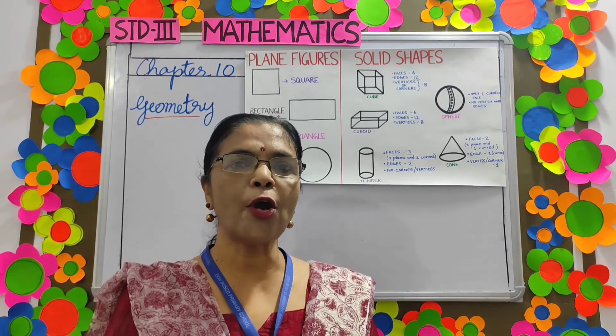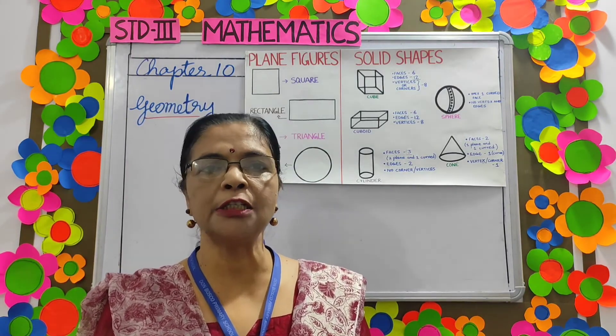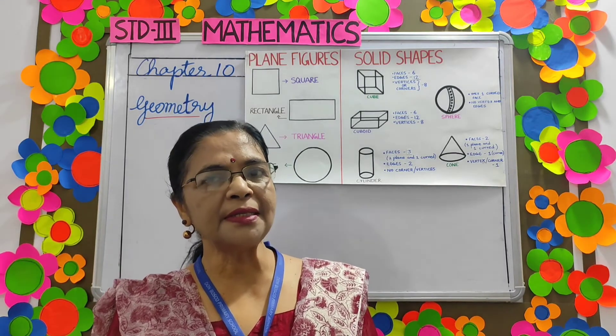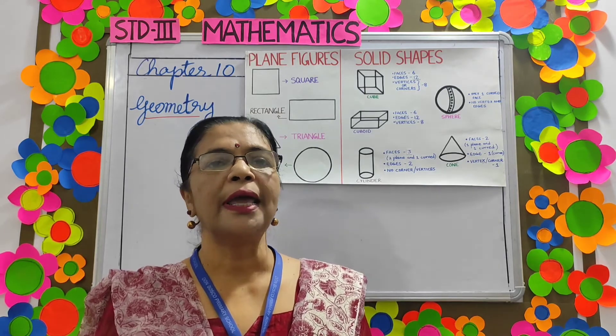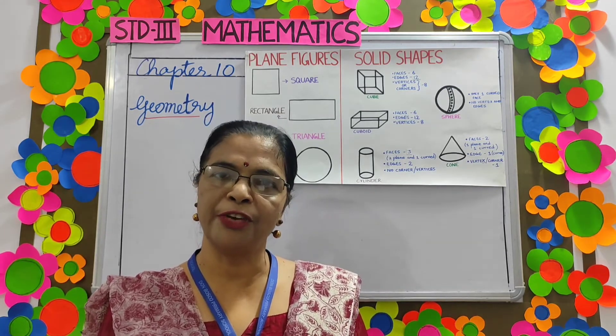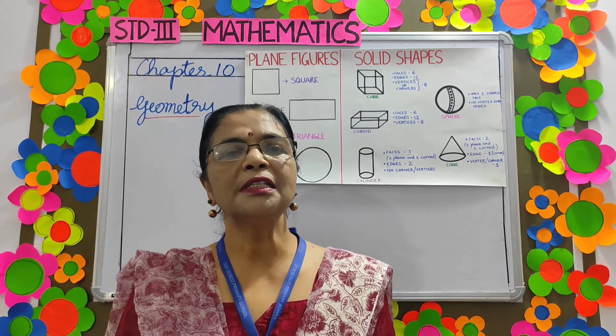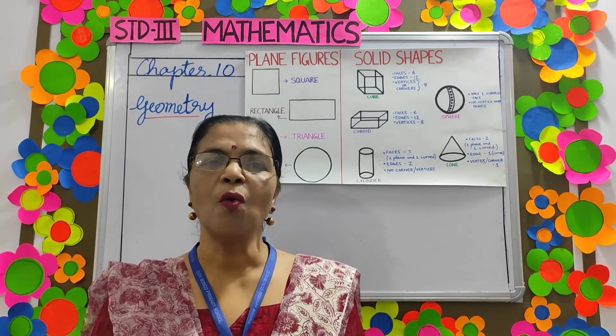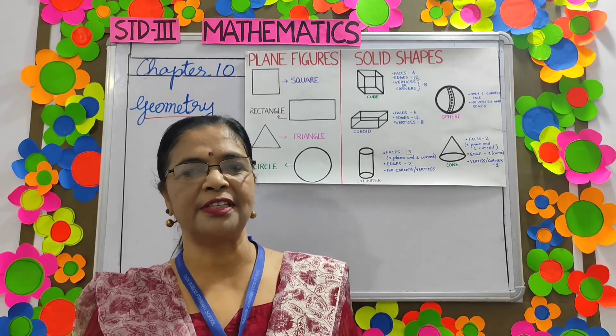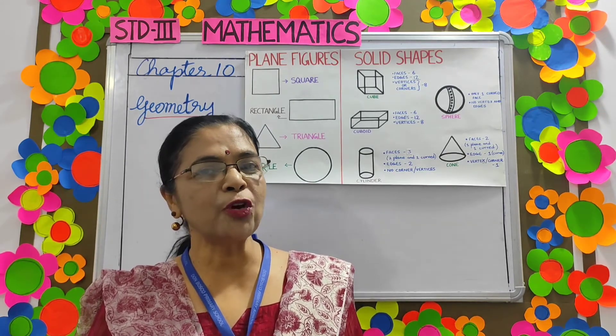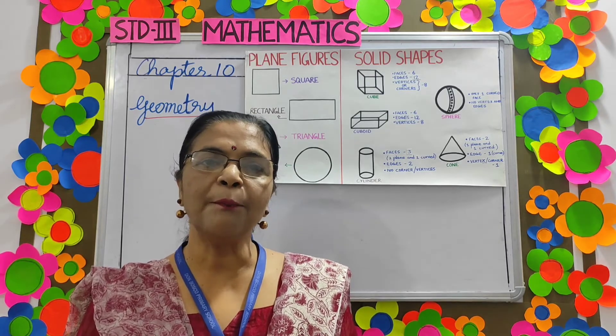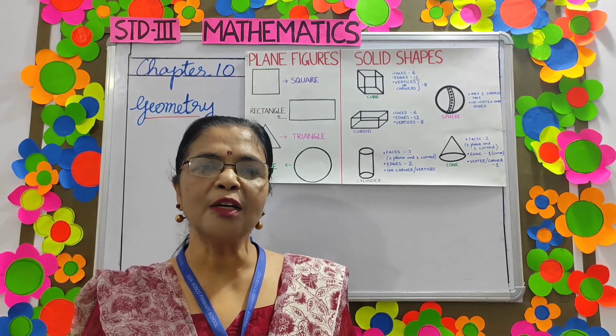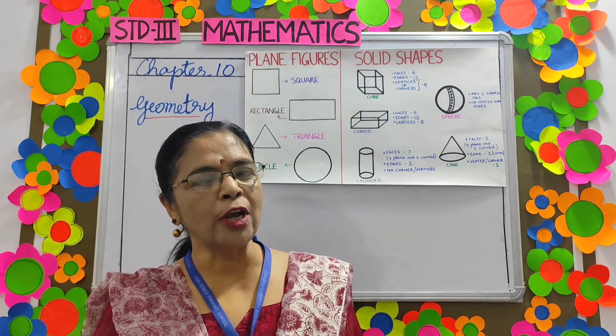An object that occupies space is called a solid. A cricket ball, a pencil, a brick, etc. are solid figures. Some solid objects have curved surfaces while some have plain surfaces. Some solids have both plain and curved surfaces. Now let's learn more about solid figures.